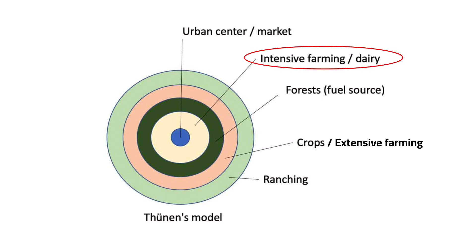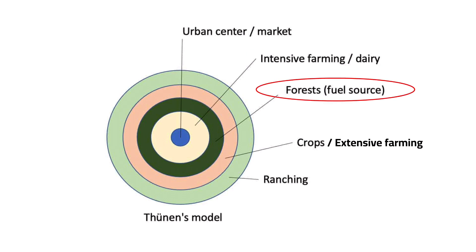The second ring would have intensive agriculture, as land closer to the city would be more expensive, and since intensive farming requires high levels of labor, it has to be located near where people live. Additionally, because intensive agriculture products involve perishable items such as fruits and dairy products, it is ideal to have them located near the market for quick transport. As you can see in the picture, the third ring is the forest, which is used as a building material. Since timber is routinely needed by people, it has to be close to the market.